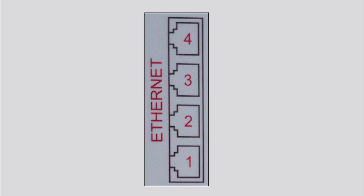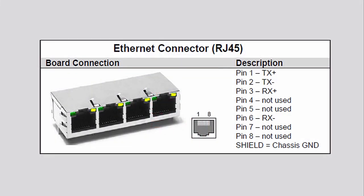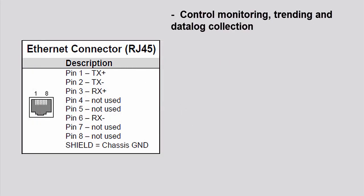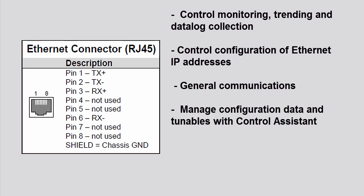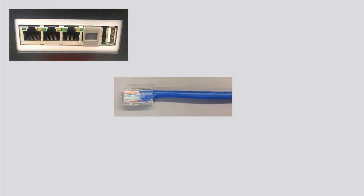The first available communication type is Ethernet. There are four isolated RJ45 Ethernet ports. The Ethernet connections can be used for multiple purposes with the controller, including control monitoring, trending, and data log collection, control configuration of Ethernet IP addresses, general communications such as Modbus, managed configuration data and tunables with control assistance, and 505 remote view connection. Connecting to the Ethernet ports is as simple as plugging an RJ45 Ethernet cable into an available Ethernet port on the back right side of the unit.